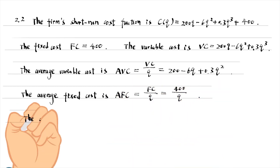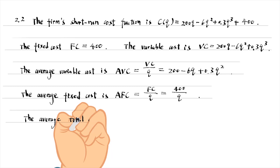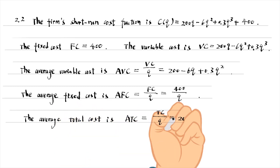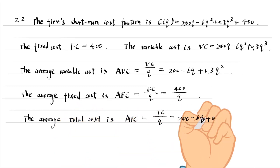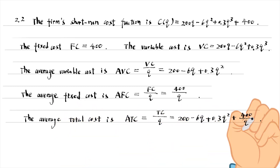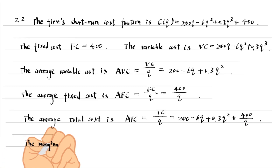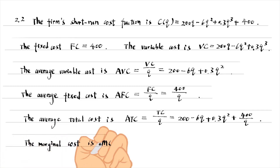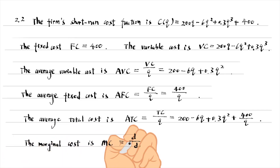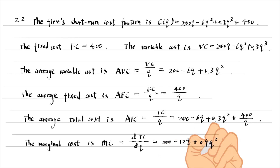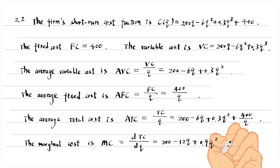The average total cost is the total cost divided by the units of output produced. The marginal cost is the change in the cost if one more unit of output is produced. It is the derivative of the total cost with respect to output.